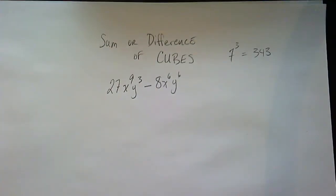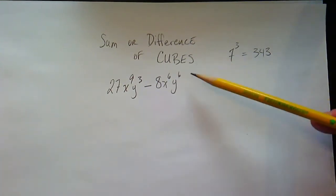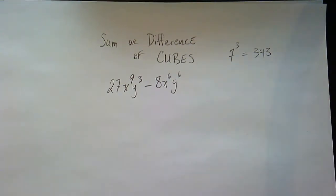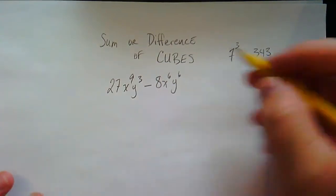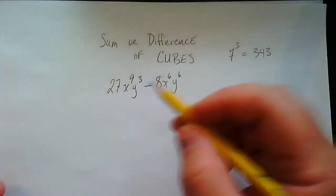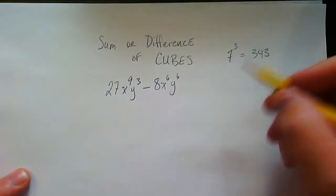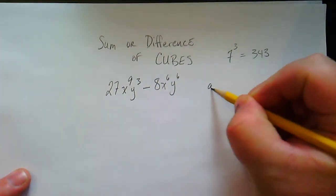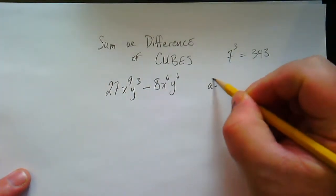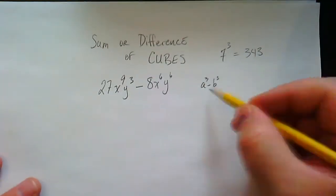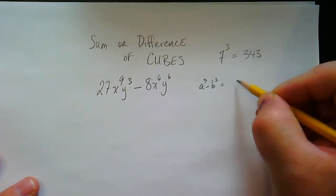All right ladies and gentlemen, let's go ahead and talk about factoring the sum or difference of cubes. And let's just jump in and do this problem right here. So this one's really tricky. Here's the deal — first thing you got to do is identify: is it a sum or a difference? This is a difference because it's subtraction. Here's how the formula works if you have the difference of cubes.